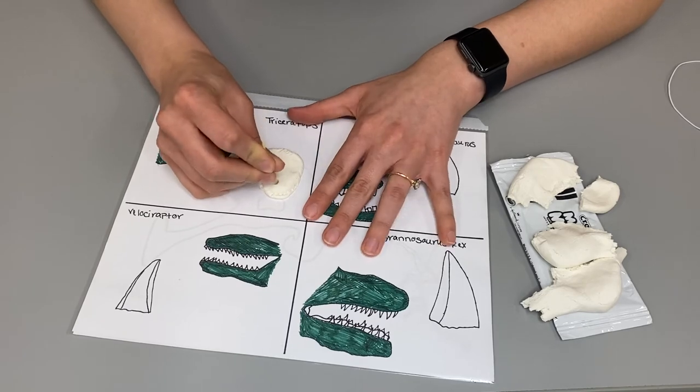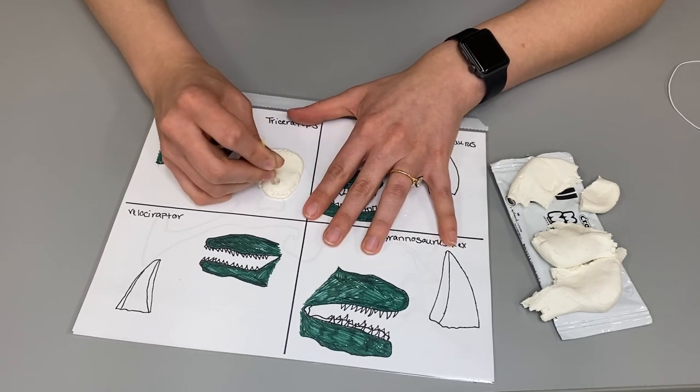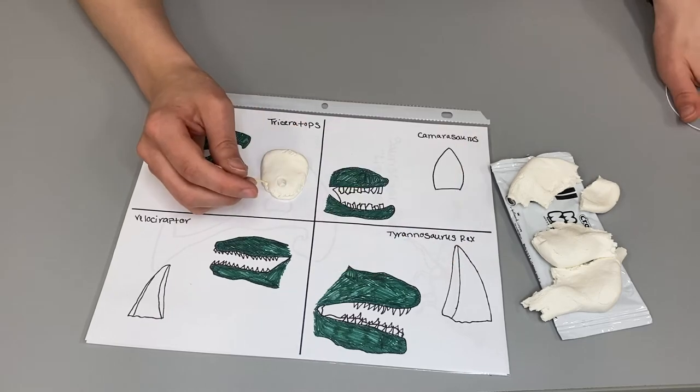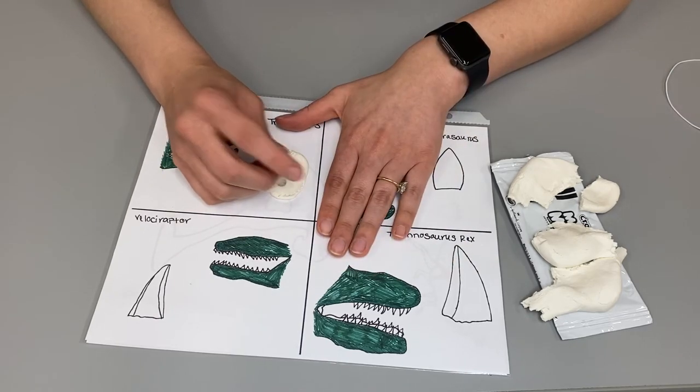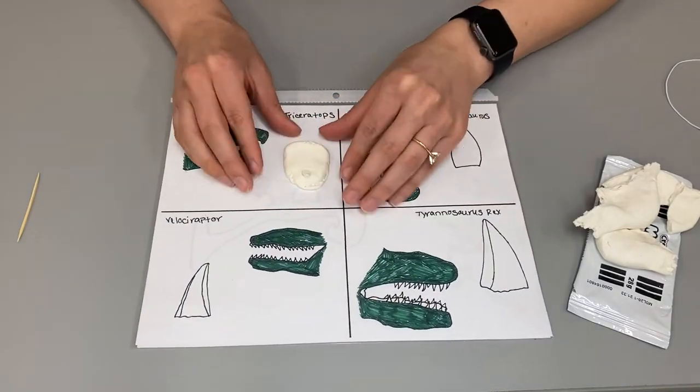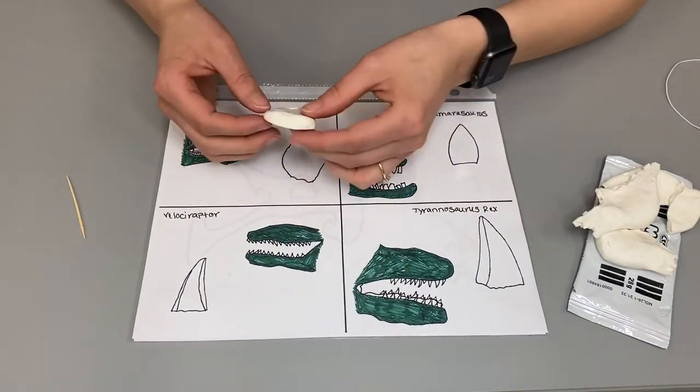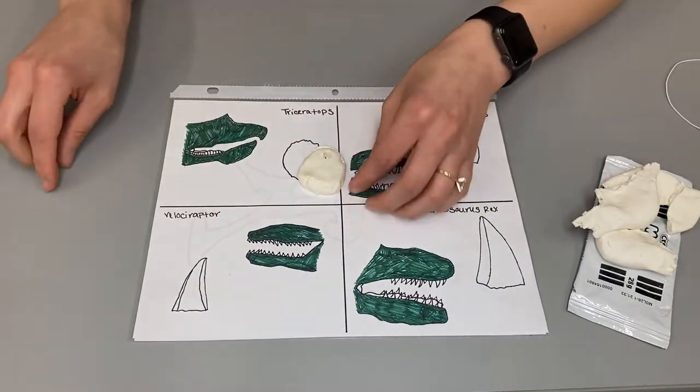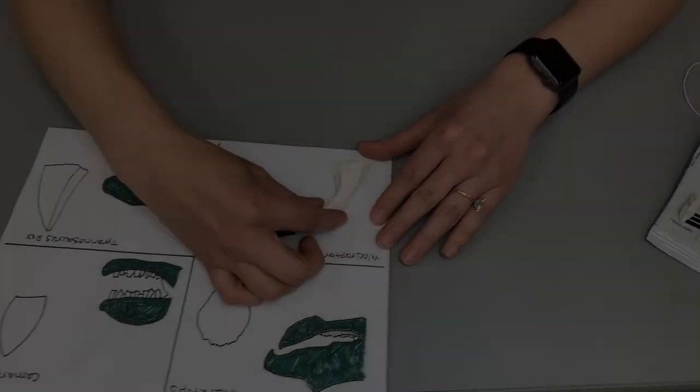Now, once you're done forming the tooth, depending on whether or not you would like to make a bracelet or a necklace, you can make a hole towards the bottom center of the tooth to insert the elastic string through. Once you're done, go ahead and set it to the side and start on the next one.